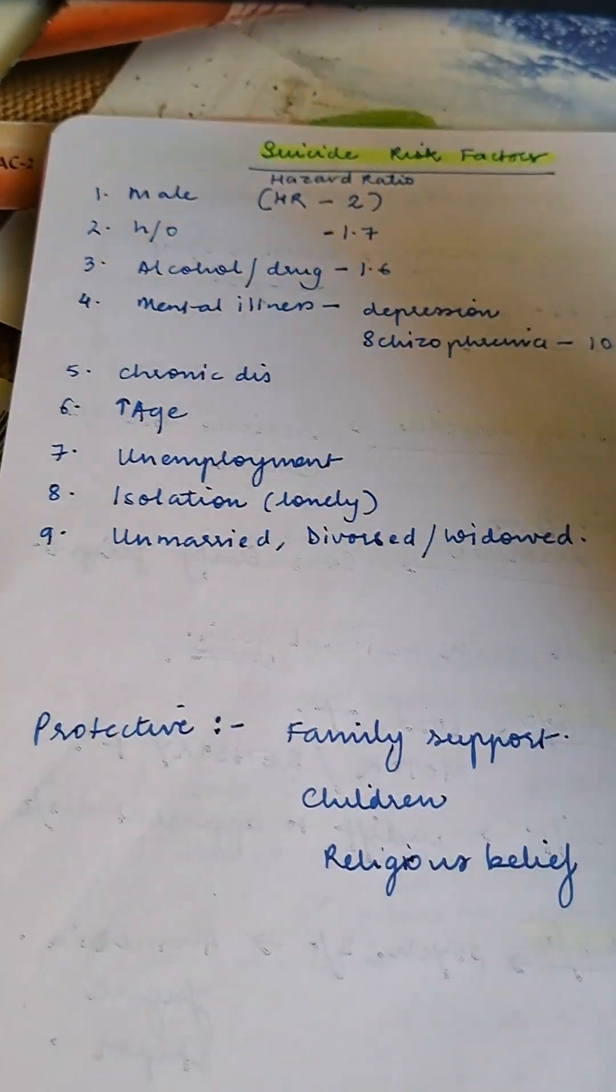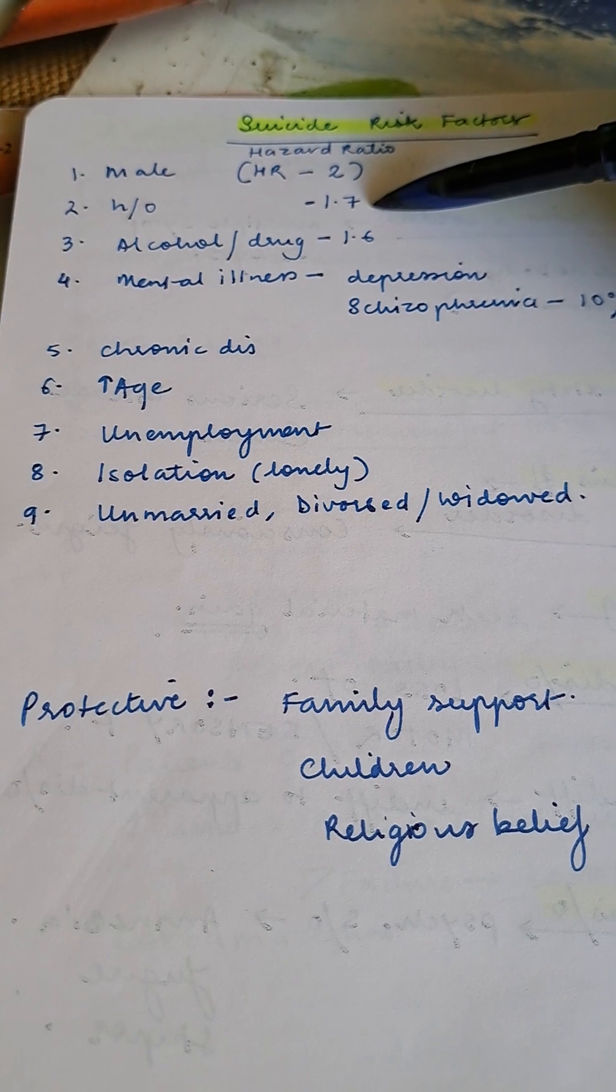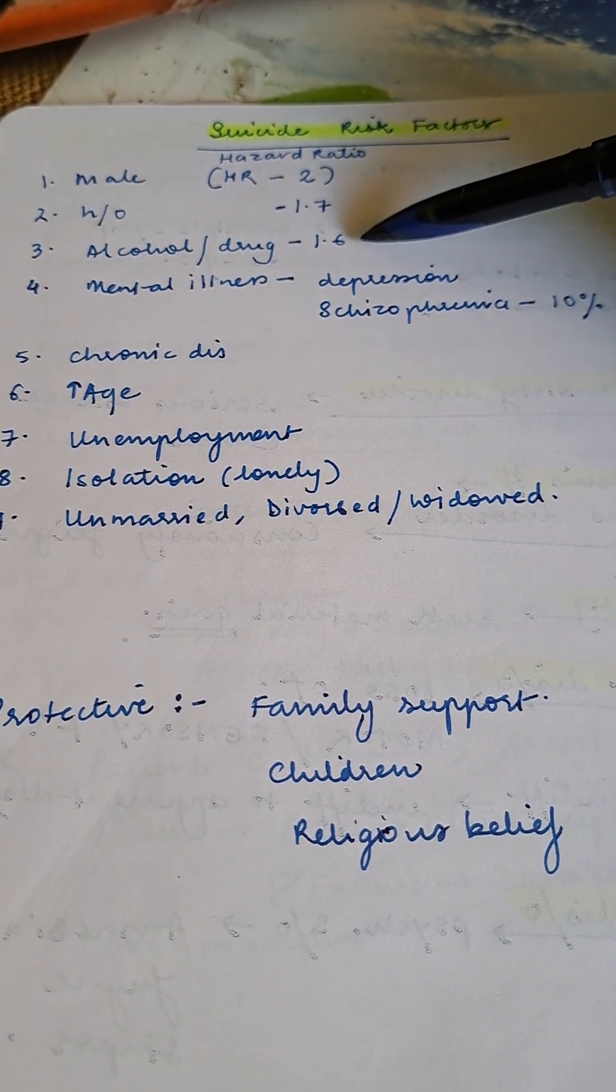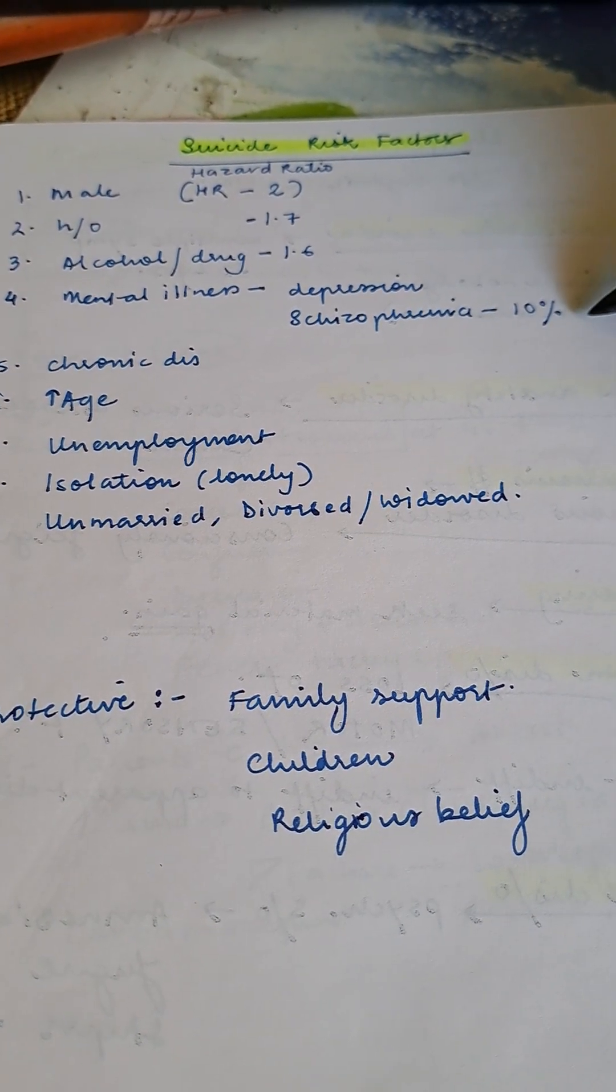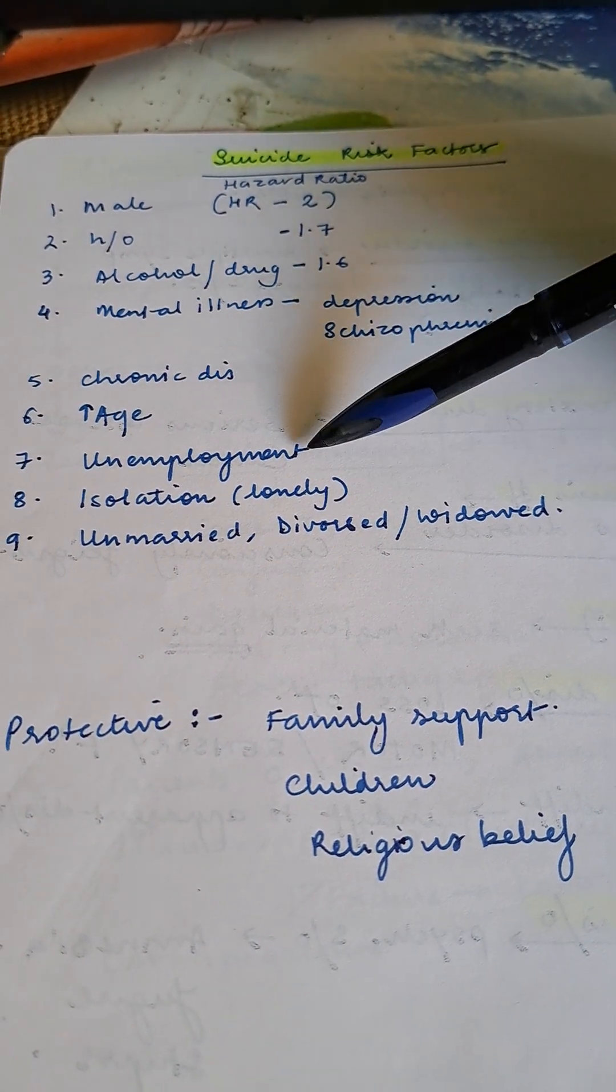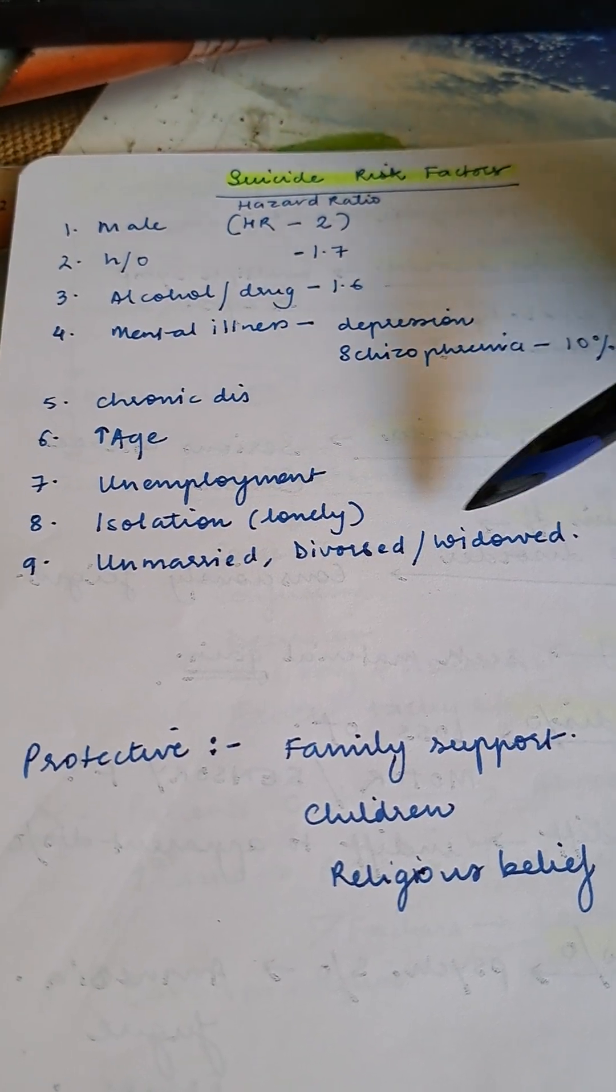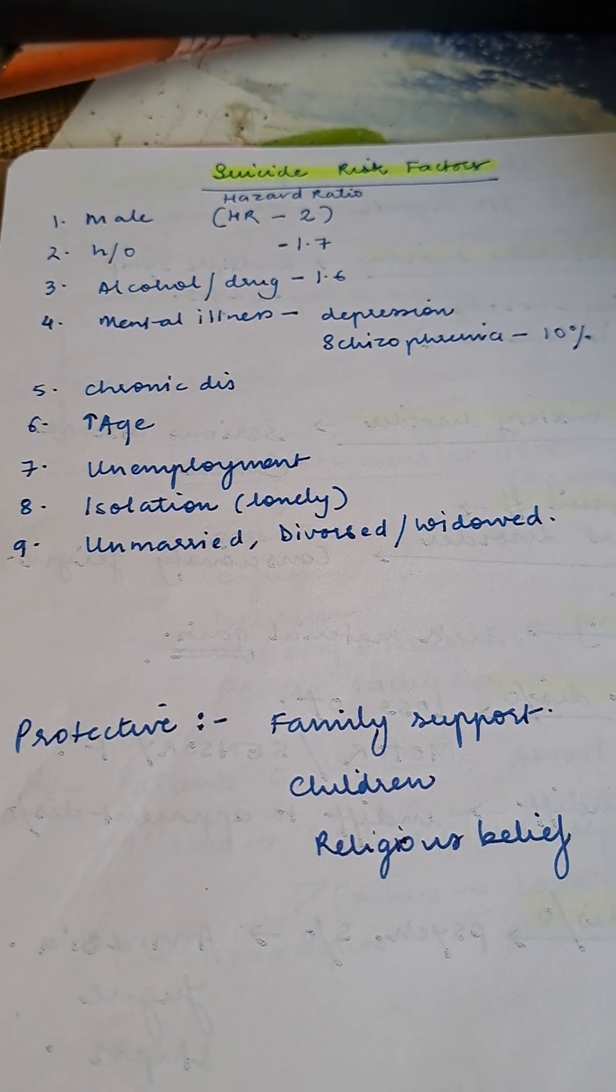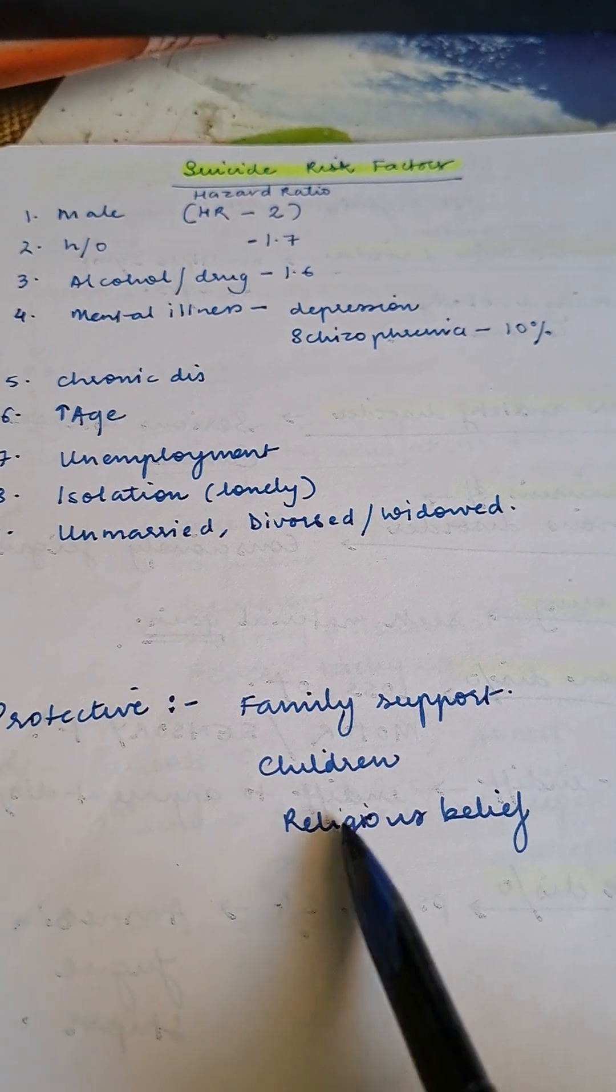Suicide risk factors with hazard ratios: male is 2, history of suicide 1.7, alcohol or drug use 1.6, mental illness like depression or schizophrenia 10% suicide risk, chronic disease, increasing age, unemployment, isolation especially lonely people, unmarried, divorced, or widowed. Protective factors: family support, children, and religious beliefs.